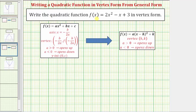We're asked to write the quadratic function f of x equals two x squared minus x plus three in vertex form. The given quadratic function is in the form f of x equals ax squared plus bx plus c, which is often referred to as general form or standard form.